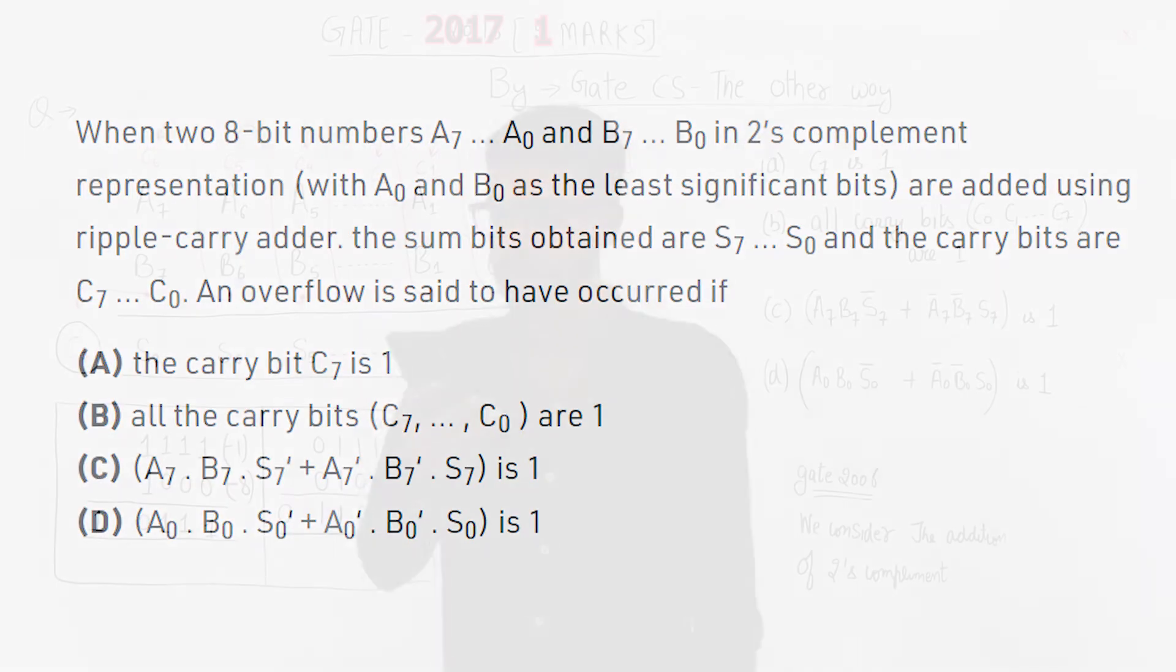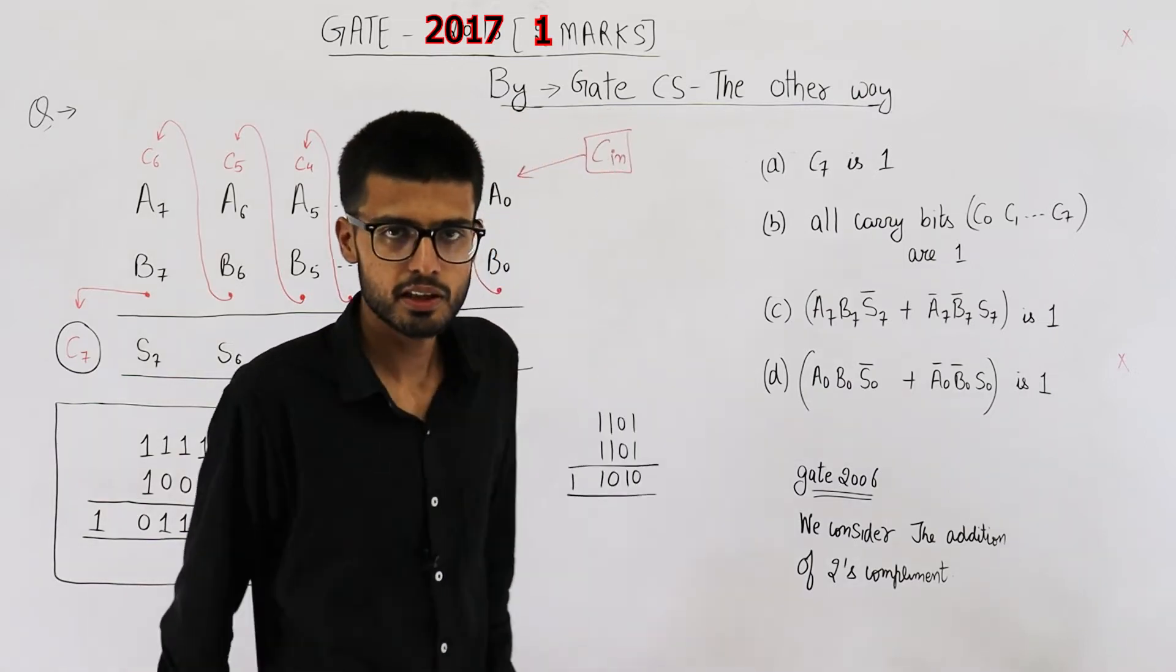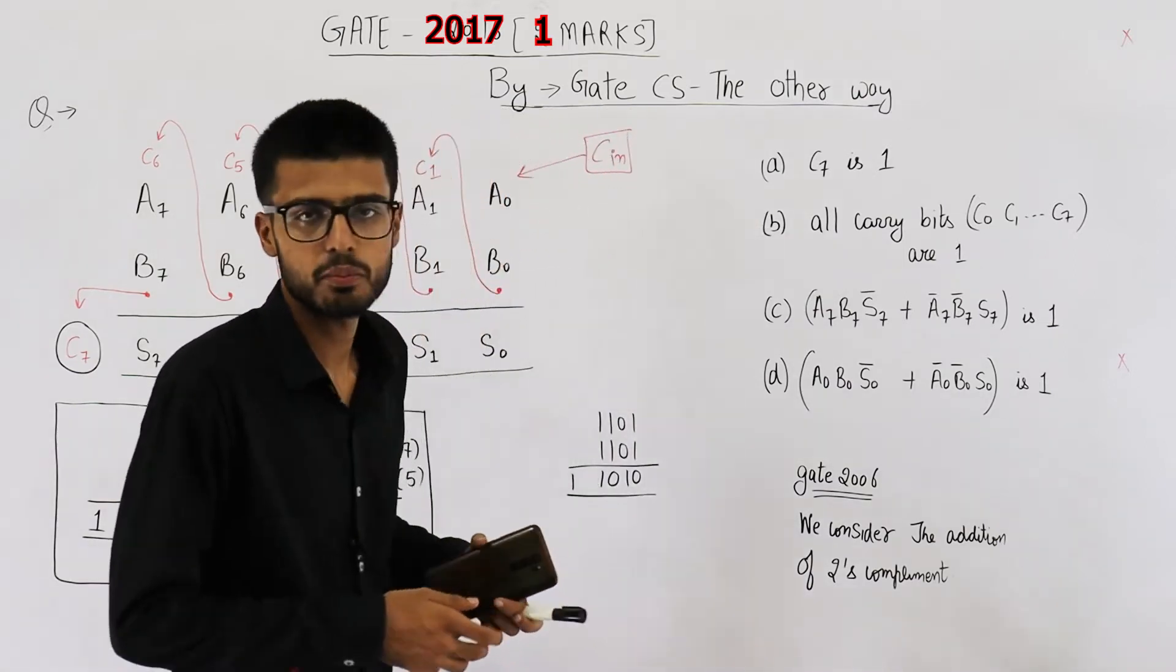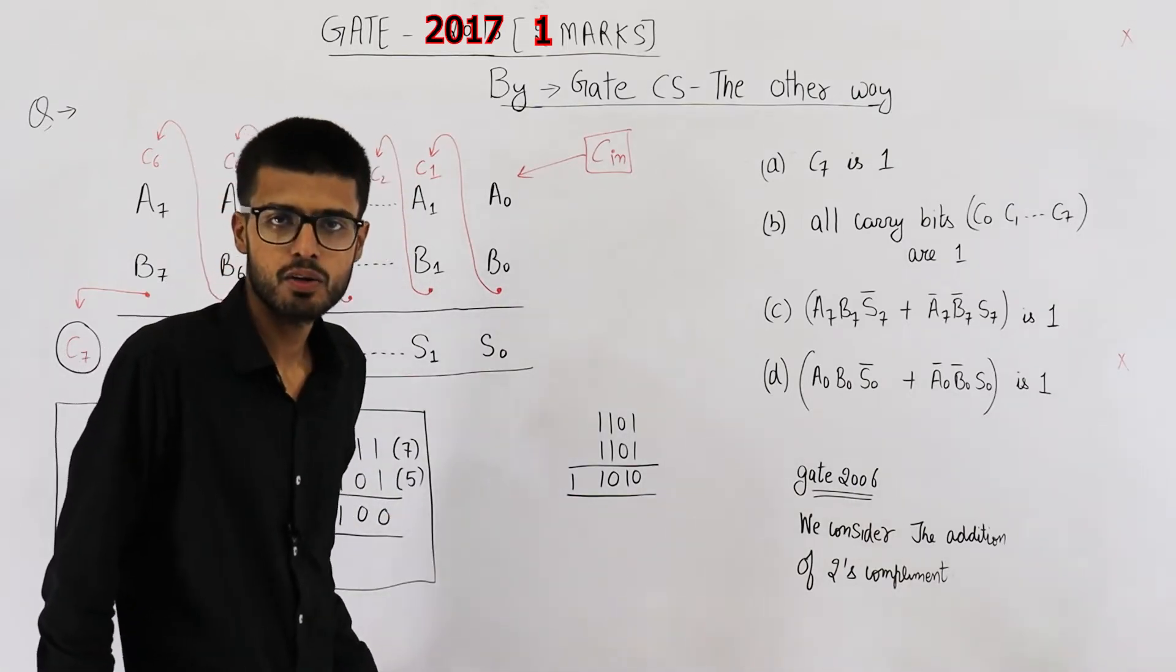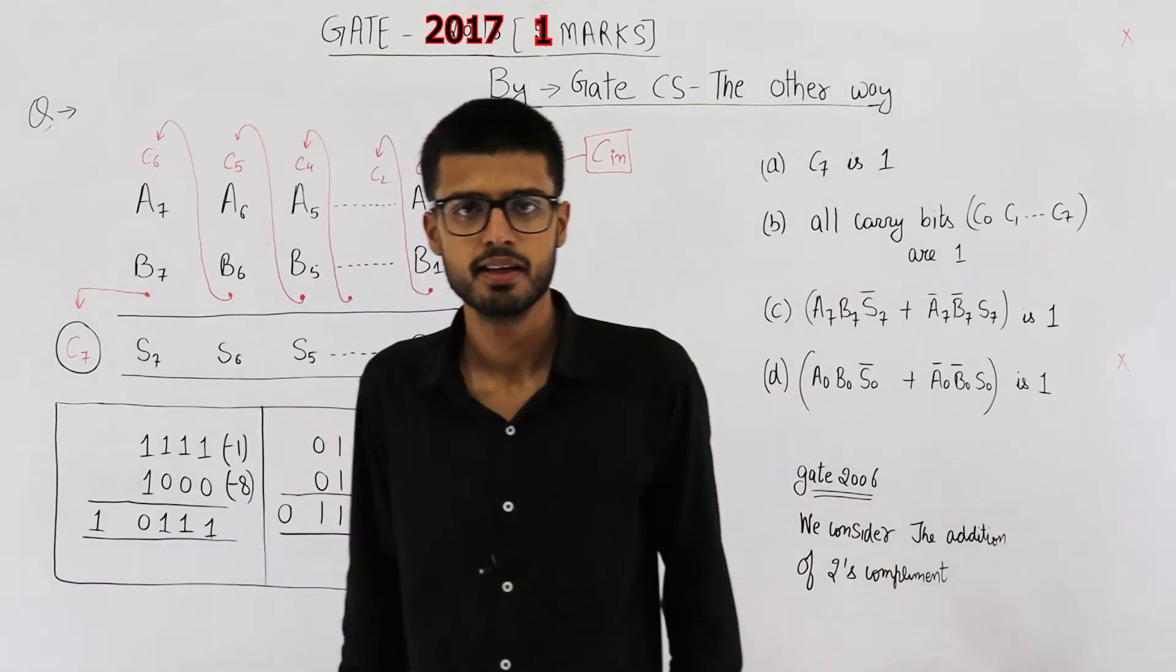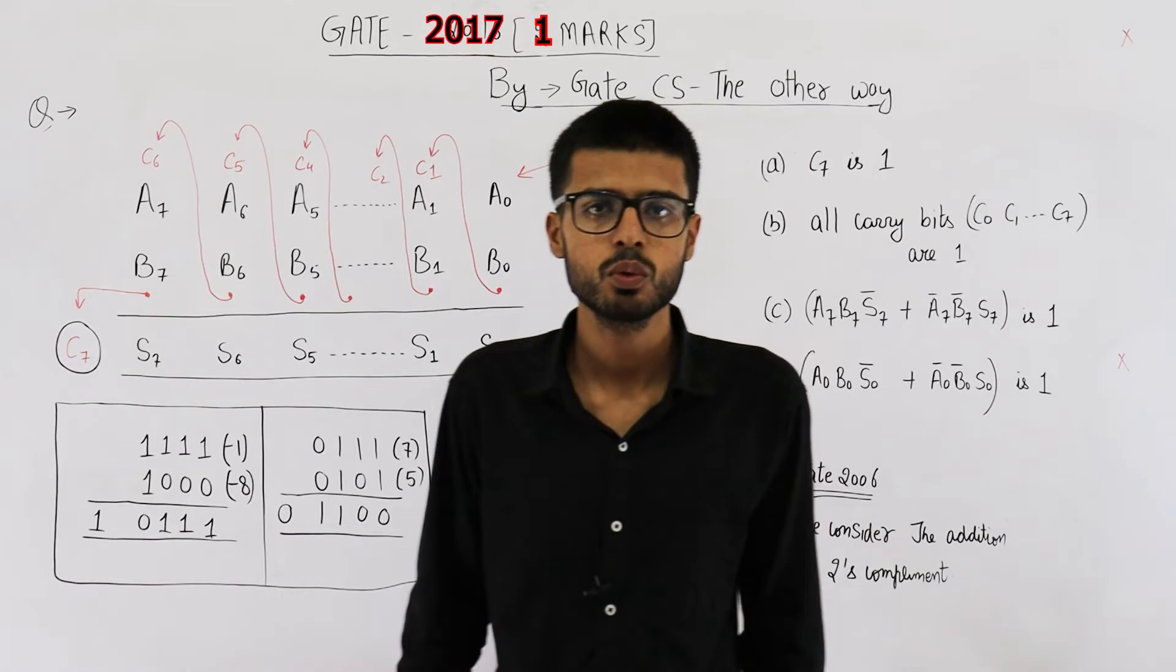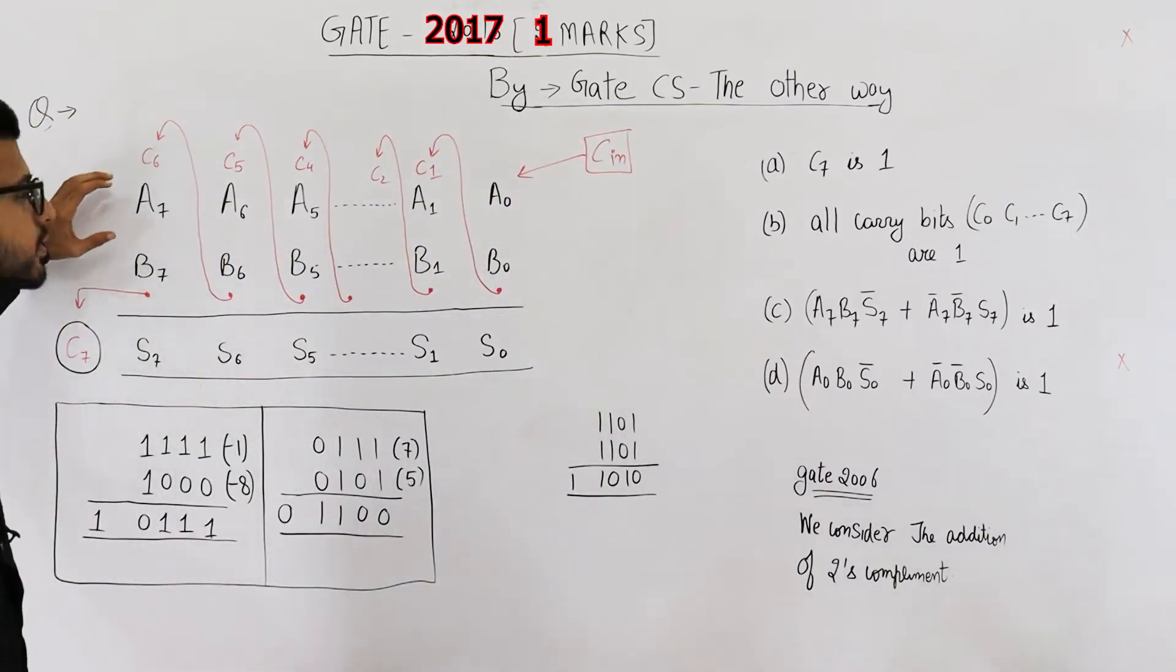An overflow is said to have occurred if... So you can see, we need to determine under which of the following conditions will there be an overflow. Now you know that if we add two positive numbers and the result is negative, we will say there is an overflow. Similarly, if you add two negative numbers and the result is positive, we will say there is an overflow.